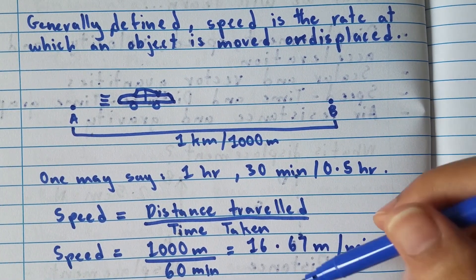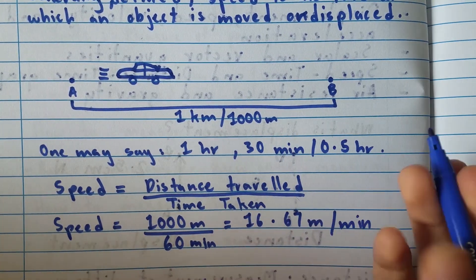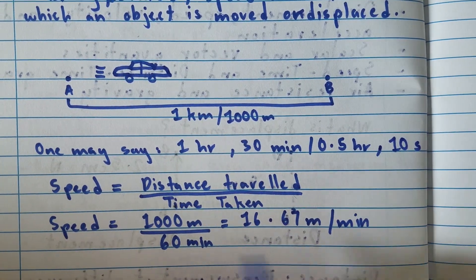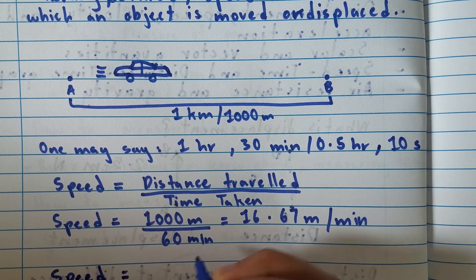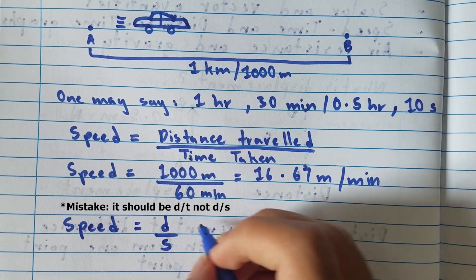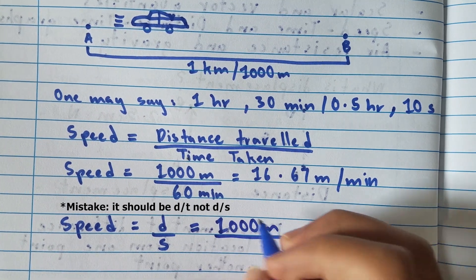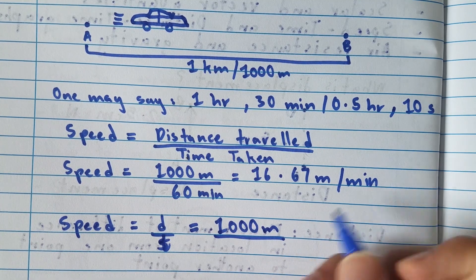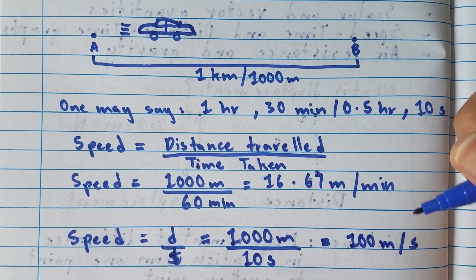As you can see, 16.67 meters per minute is pretty slow — in one minute the car travels only 16.67 meters. Now let's say it took the car 10 seconds to travel 1000 meters, which seems more reasonable for a really fast car. Speed equals distance over time: 1000 meters over 10 seconds gives us 100 meters per second. So this is a really fast car.